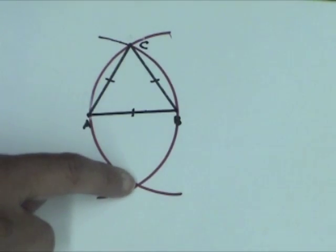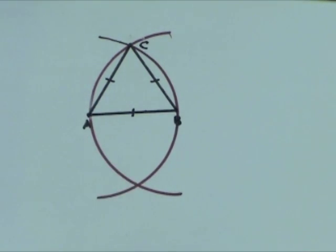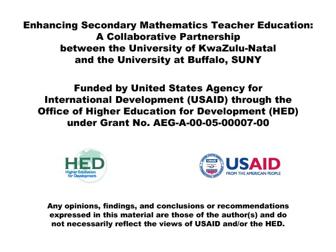We could have labeled the second point of intersection as C to obtain a second equilateral triangle ABC.